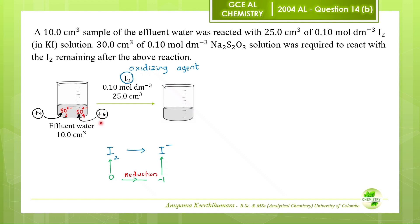The maximum oxidation state of sulphur is plus 6. As the sulphur atom is in the highest oxidation state, sulphate ions cannot be oxidised. Therefore, when this iodine solution is added to the effluent water, only the sulphite ions oxidise to sulphate ions.